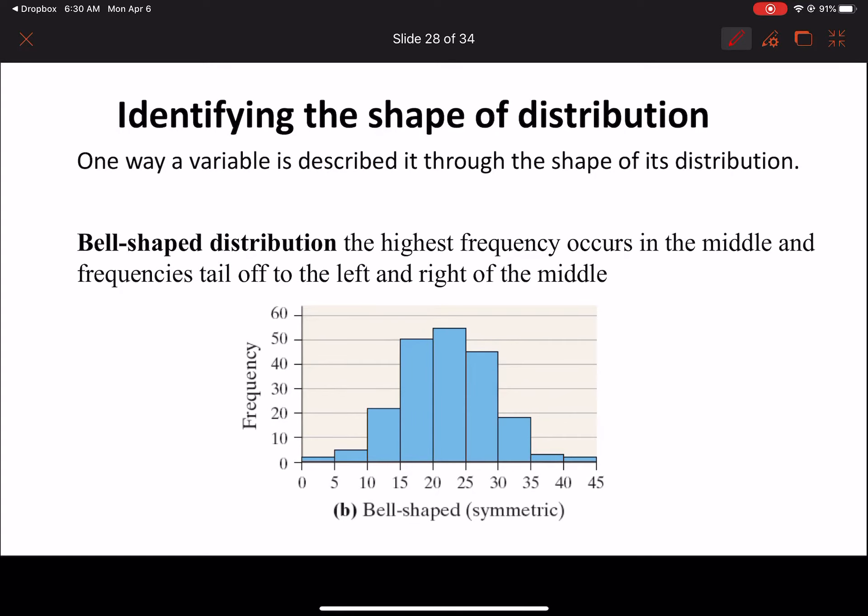This right here is a bell-shaped graph, a bell-shaped distribution. The highest frequency is in the middle. The frequency for each tail to the left and the right gets smaller and smaller. When your data is like this, it's called bell-shaped. And so this is also called a normal distribution. This is like goals, this is our goals for distributions right here.